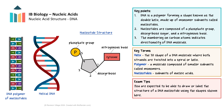DNA is a polymer, which means it's a larger molecule made up of smaller subunits called nucleotides. Each DNA nucleotide is composed of a nitrogenous base, a deoxyribose 5-carbon sugar, and a phosphate group. A convenient way to draw the nucleotide is to use a circle for the phosphate group, a pentagon for the deoxyribose sugar, and a rectangle to represent the nitrogenous base.